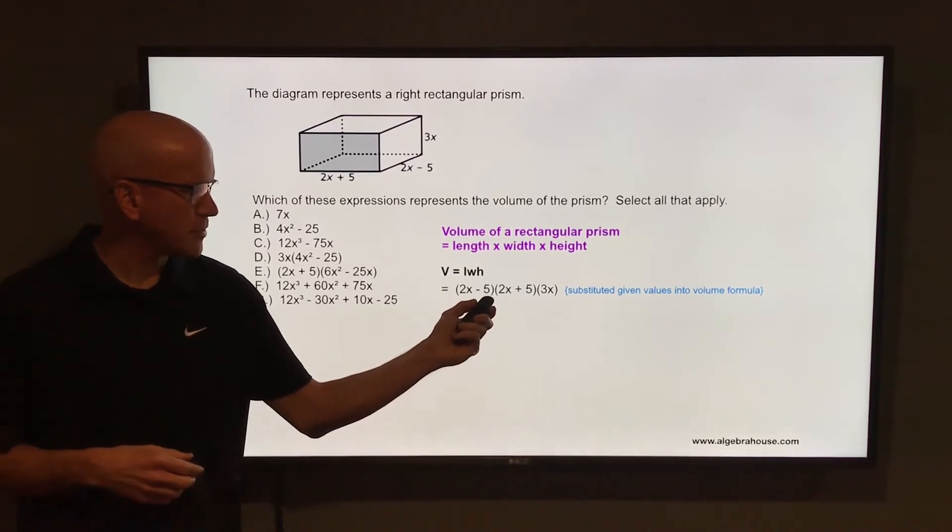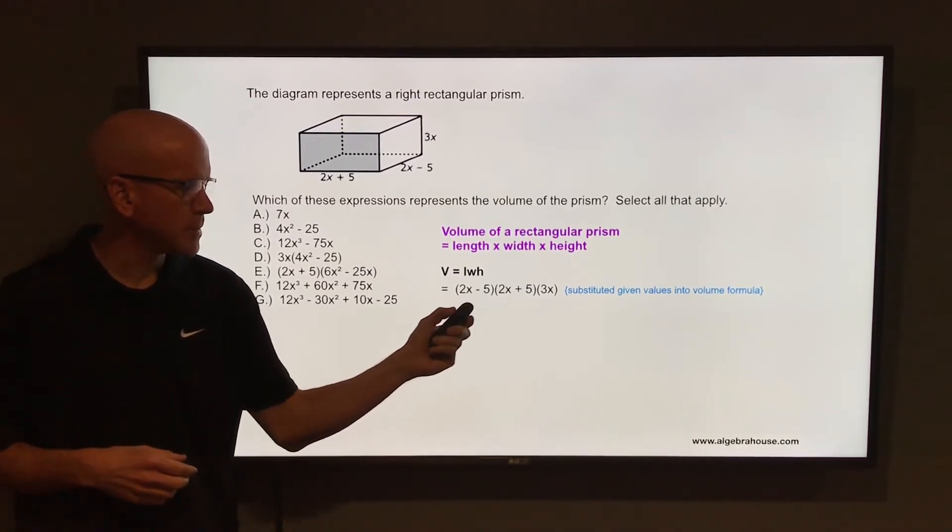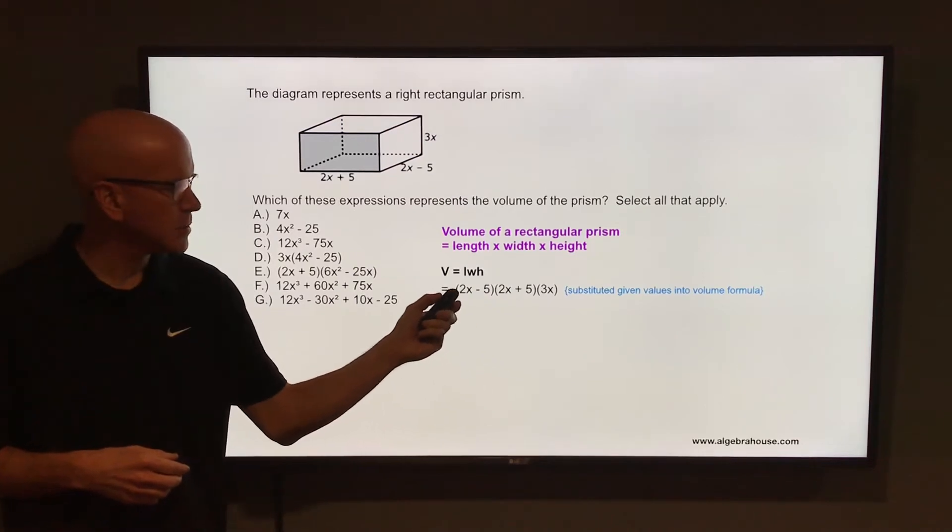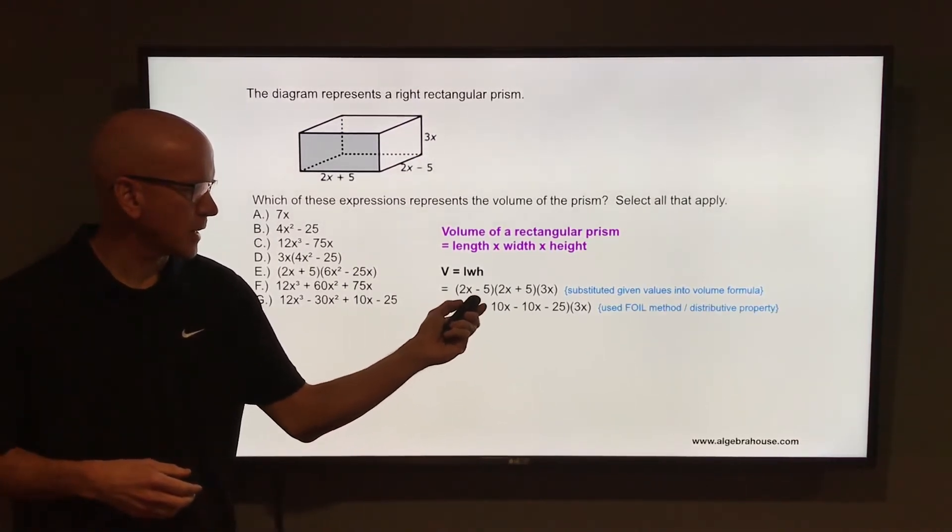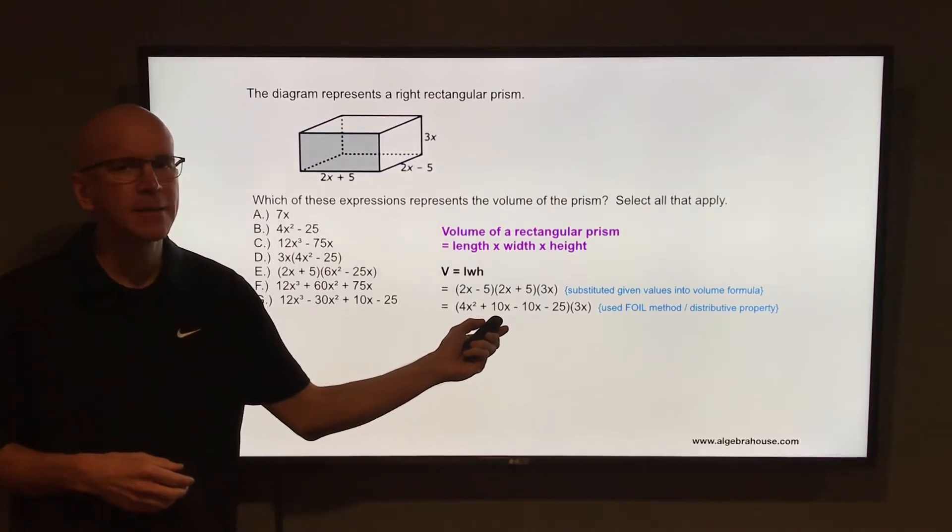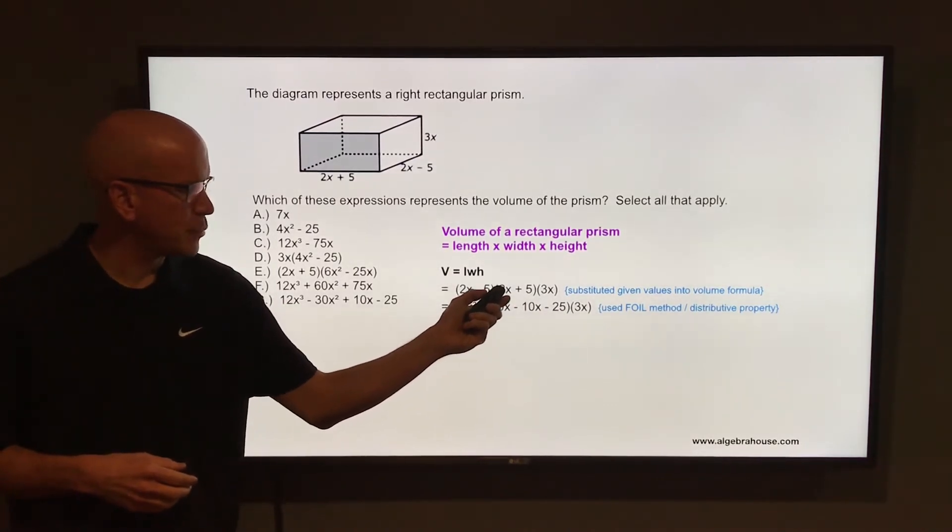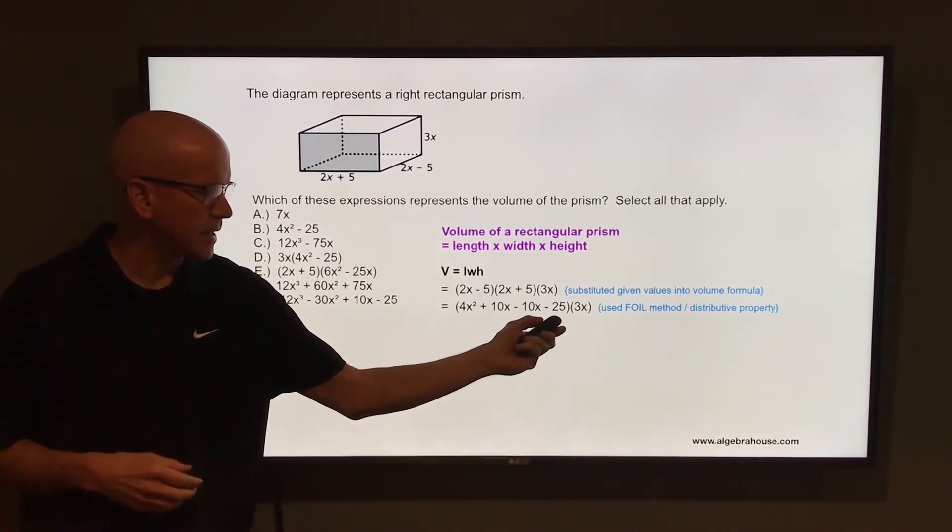You can use the FOIL method or distributive property with those two binomials. Distribute that 2x through that set of parentheses. So take 2x times 2x that is 4x squared, and take 2x times 5 that would be 10x, then distribute the negative 5 through that set of parentheses. Take negative 5 times 2x that is negative 10x, and negative 5 times 5 that is negative 25.